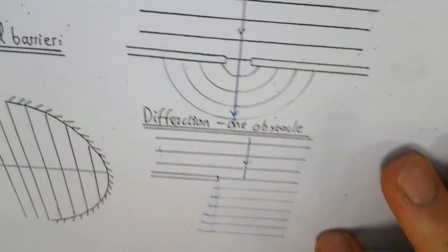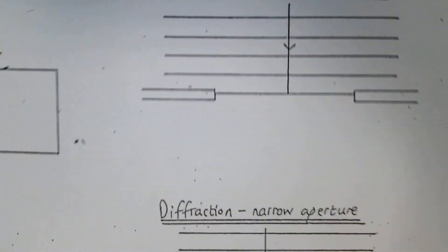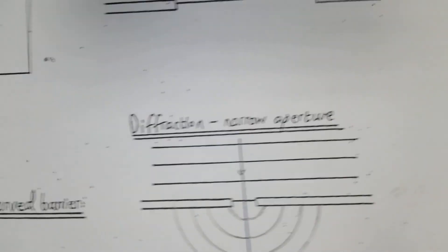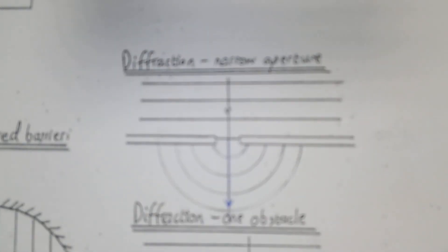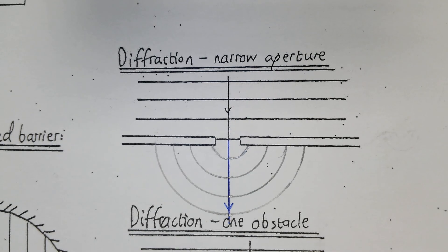I'm just going to be careful to rub out that little bit because it doesn't go back. So that shows your diffraction through the narrow aperture, your maximum level of diffraction.